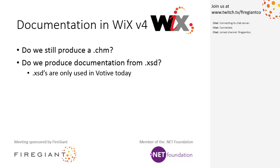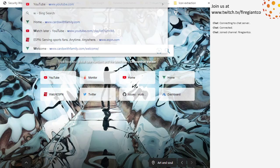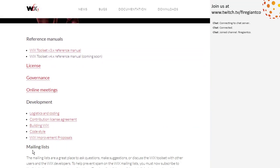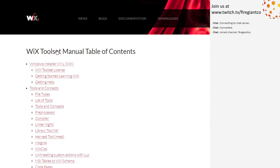Any other thoughts, Sean? No, I was going to ask the same v3 vs v4 question that Bob did. I think - let me pull it up - we go to documentation, the reference menu, and it already has a v3 in it. So the URL is actually okay already, although it's down pretty far. It does say wixtoolset.org documentation manual v3. It would have been better as documentation v3 manual, but anyway, we already have a v3 in there, so we could put a v4 in there somewhere and it would work out.